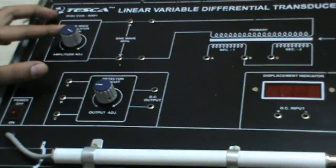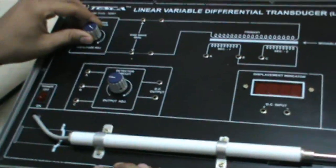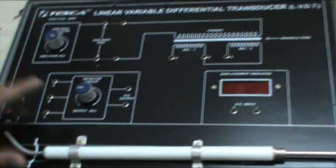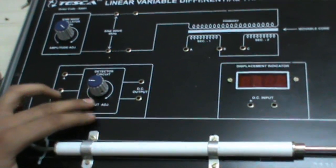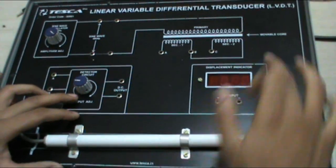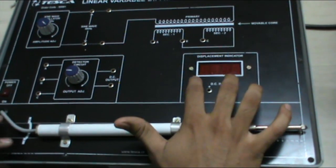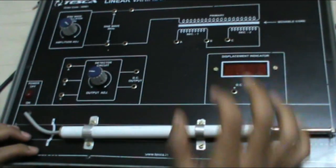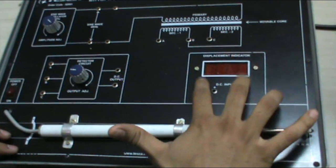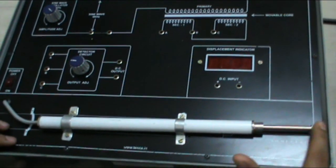This is our sine wave oscillator amplitude adjustment knob. This is our detector circuit output adjustment knob. This is the movable core which can be seen here, and this is our LCD display to display the displacement of this movable core.